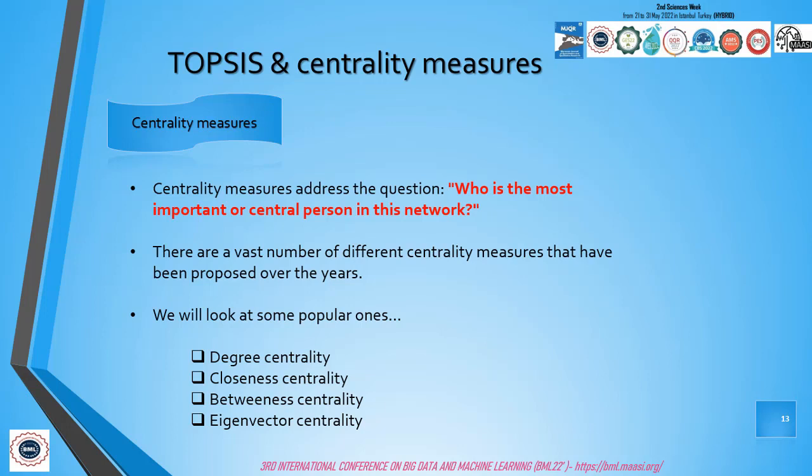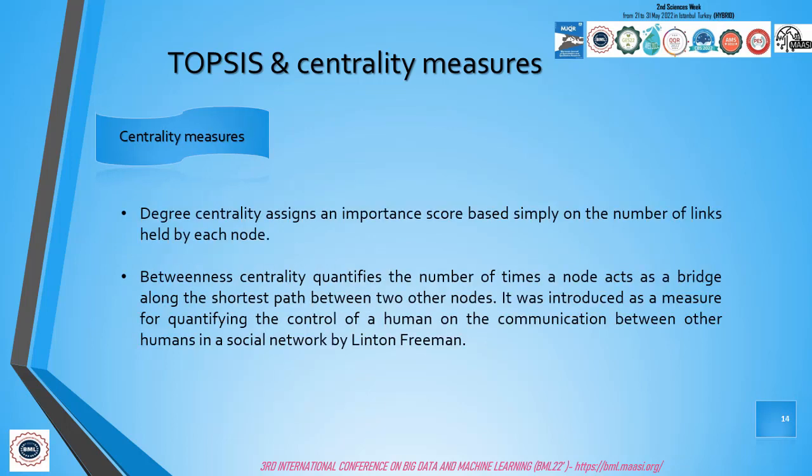Centrality measures address the question: who is the most important or central person in this network? There are a vast number of different centrality measures that have been proposed over the years. We will look at some popular ones, for example, degree centrality, closeness and betweenness centrality, and eigenvector centrality. Degree centrality assigns an important score based simply on the number of links held by each node. It tells us how many direct connections each node has to other nodes in the network.